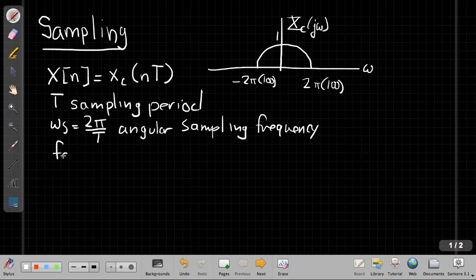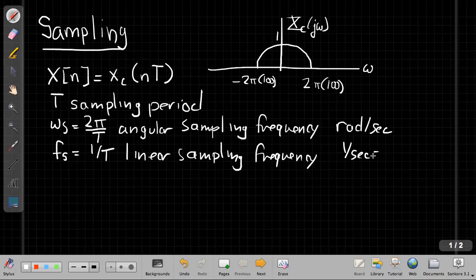And sometimes we also say f_s is the linear sampling frequency. This will be in radians per second, and this is the linear sampling frequency that will be in 1 over seconds, which we often call hertz. So it's more familiar.